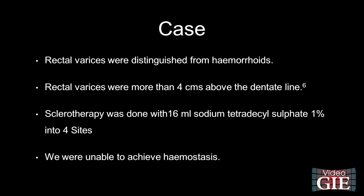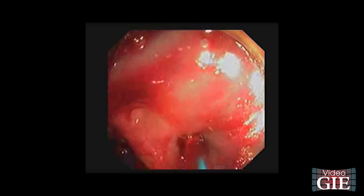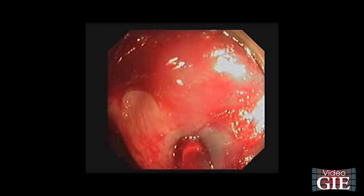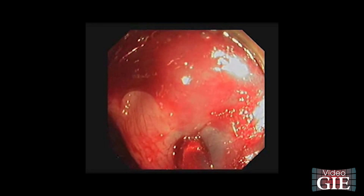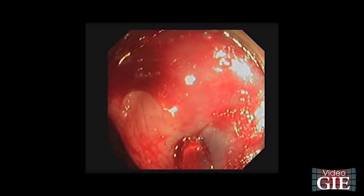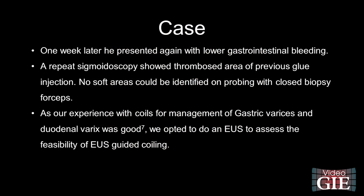The rectal varices were distinguished from hemorrhoids as they were more than 4 cm above the dentate line. Endoscopic sclerotherapy was done with 16 ml of sodium tetradecyl sulfate 1% into 4 sites, but we were unable to achieve hemostasis. Due to persistent active bleeding, he was injected with 2 ml of cyanoacrylate under direct vision onto the bleeding site. Hemostasis was achieved and the patient was discharged. A week later, he presented again with lower gastrointestinal bleeding. A repeat sigmoidoscopy showed a thrombosed area of previous glue injection, and no soft areas could be identified on probing with closed biopsy forceps.